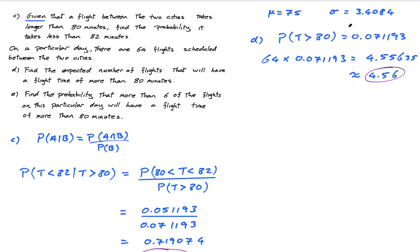Finally, find the probability that more than six of the flights on this particular day will have a flight time of more than 80. Hopefully you can see that this has now become a binomial distribution because they're either more than 80 or they're less than 80, and there's a fixed number of trials which is the 64 flights.